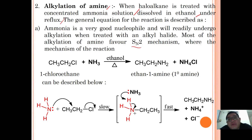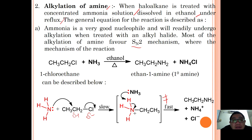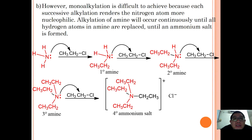Most of the alkylation of amine favors an SN2 mechanism. This alkylation works better with a primary haloalkane. In the mechanism, ammonia attacks the carbon which is partially positive, an intermediate is formed, and then the amine product is formed. This alkylation is difficult to achieve because each successive alkylation renders the nitrogen atom more nucleophilic.